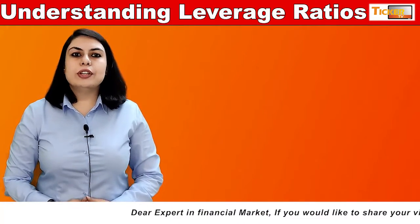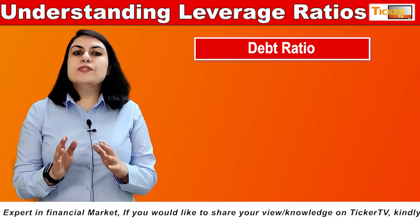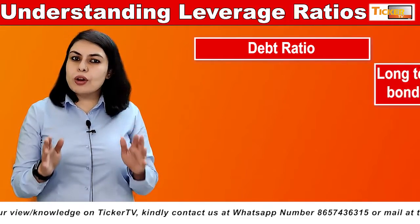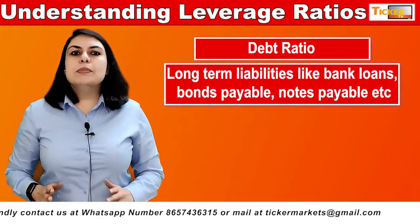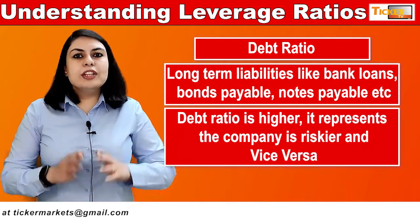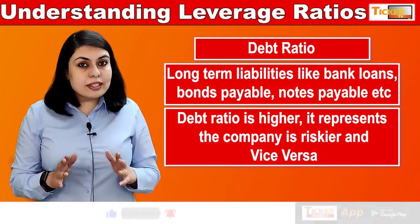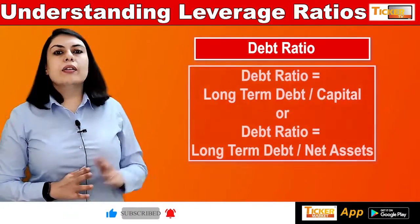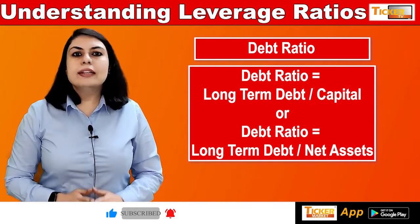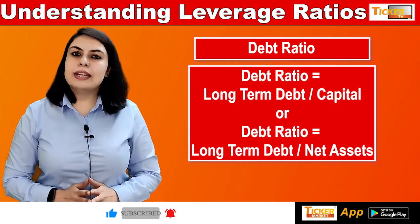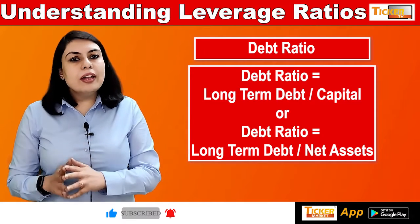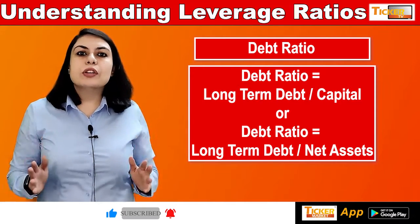The second ratio is the debt ratio. It is used in measuring a company's financial leverage and is calculated by taking total liabilities in the form of long-term liabilities like bank loans, bonds payable, notes payable, etc., and dividing by total capital. A higher debt ratio represents that the company is risky. It is calculated as long-term debt divided by capital, or alternatively as long-term debt divided by net assets. A low debt-to-capital ratio is indicative of a stable business, while a higher ratio shows doubt about the firm's long-term stability.